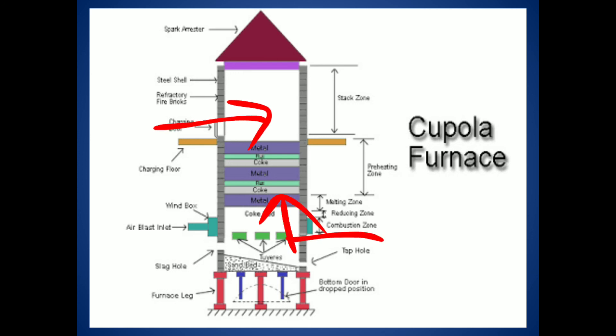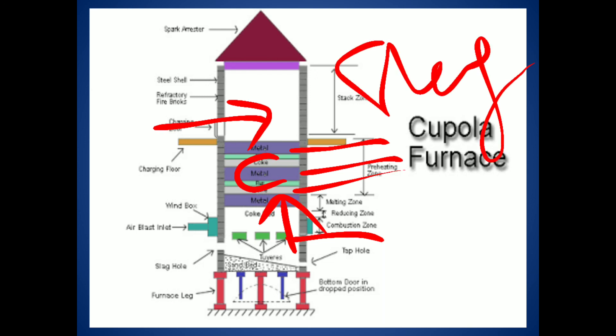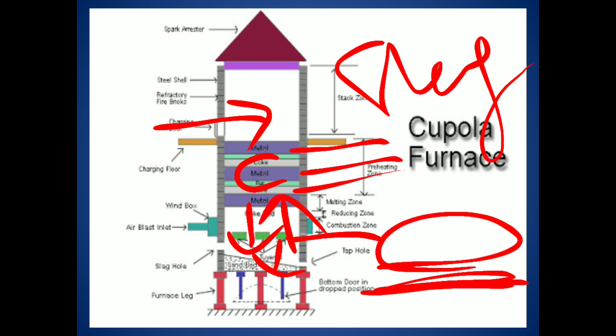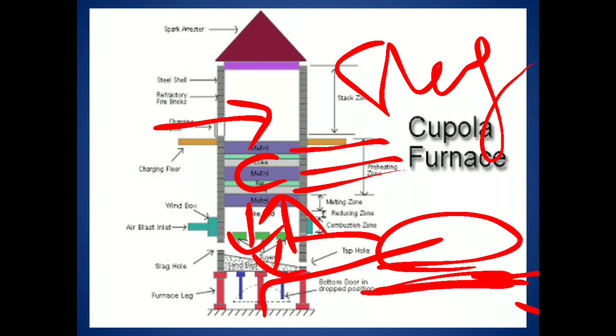When we pump the air, coke in different layers reacts with oxygen, producing high temperature. The charge melts at high temperature. The cast iron is heavier and settles at the bottom, while the slag floats above the cast iron. By using the notches, the slag and the cast iron are separated and tapped out. This is the cupola furnace method.